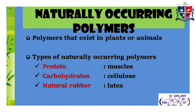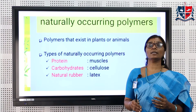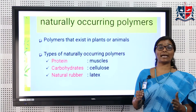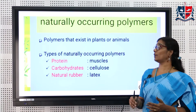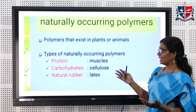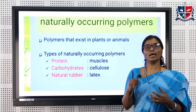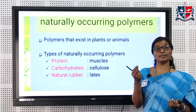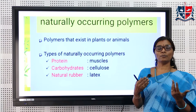There are different classifications. The first classification is based on origin. Based on origin, polymers are classified into two categories: natural polymers and synthetic polymers. Natural polymers are already present in our body — our hair consists of proteins, our nails consist of proteins, and our body has lots of proteins.